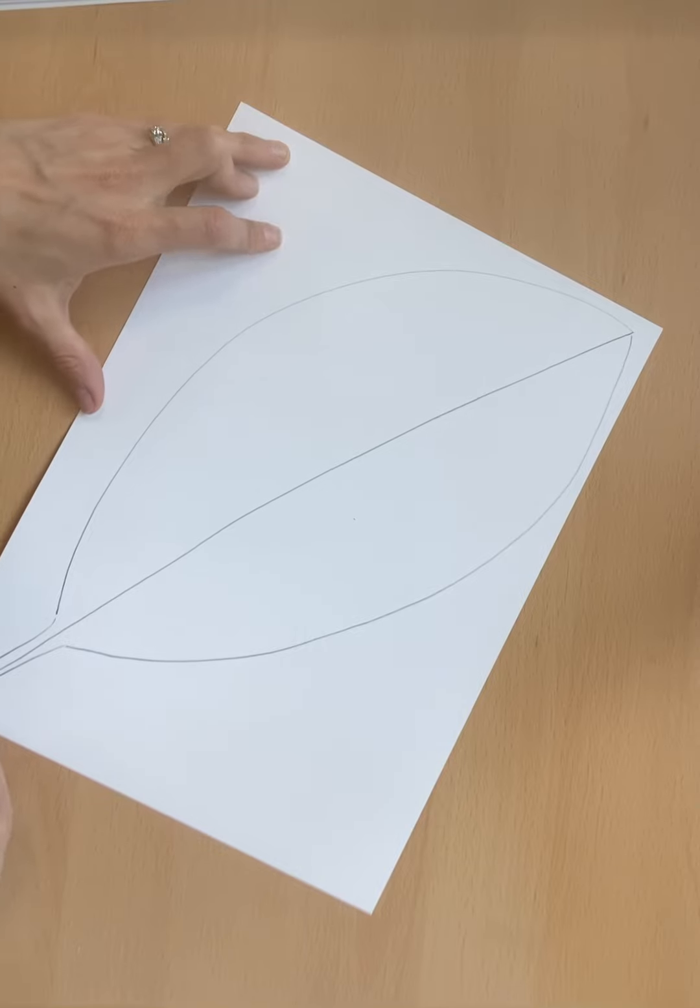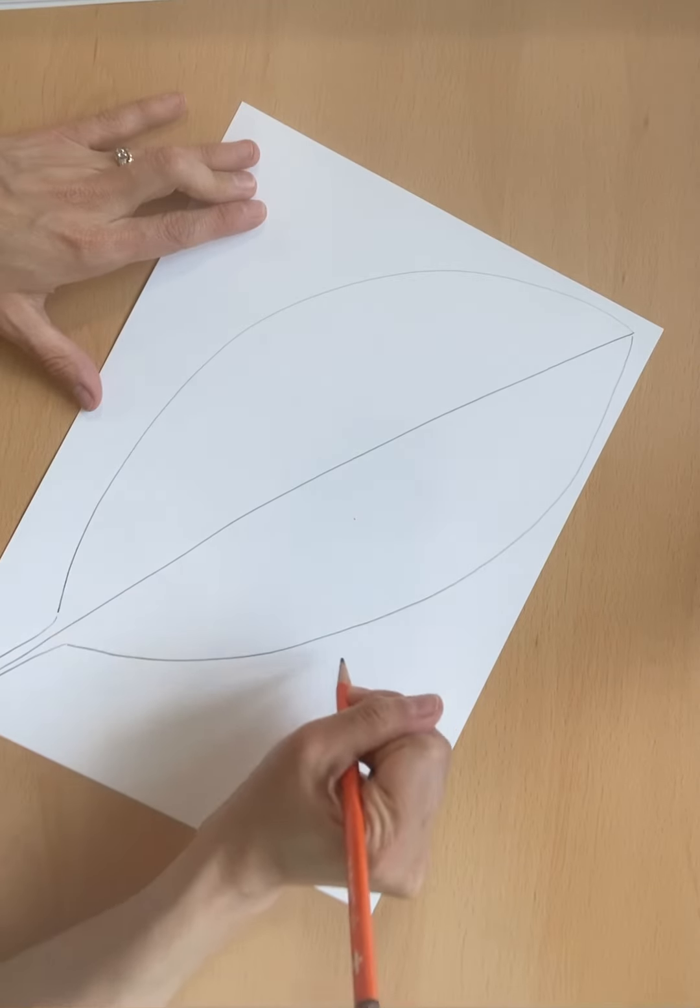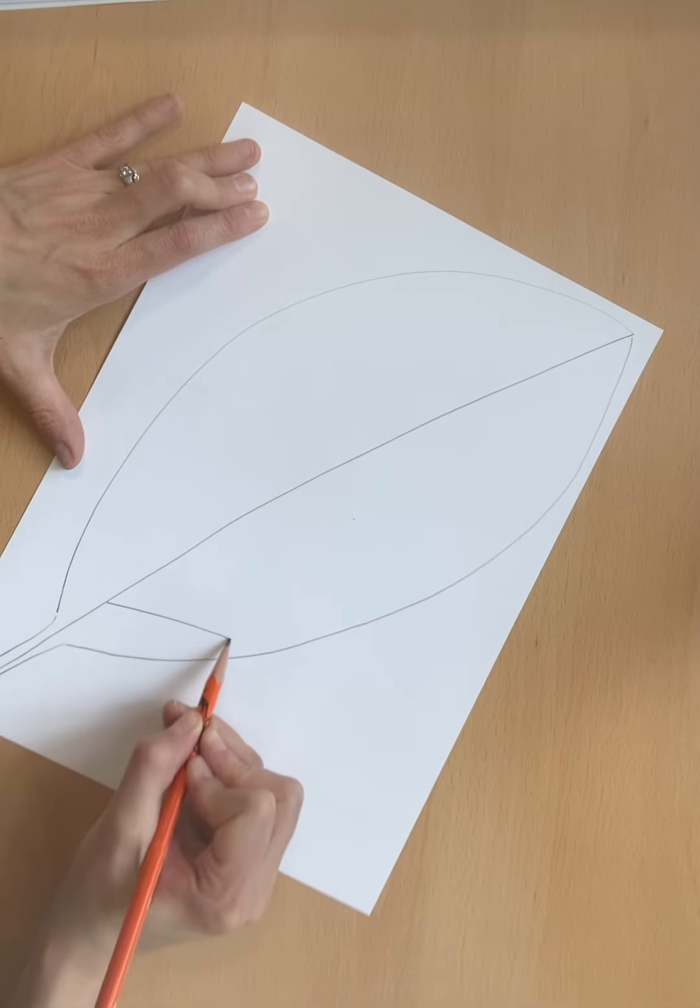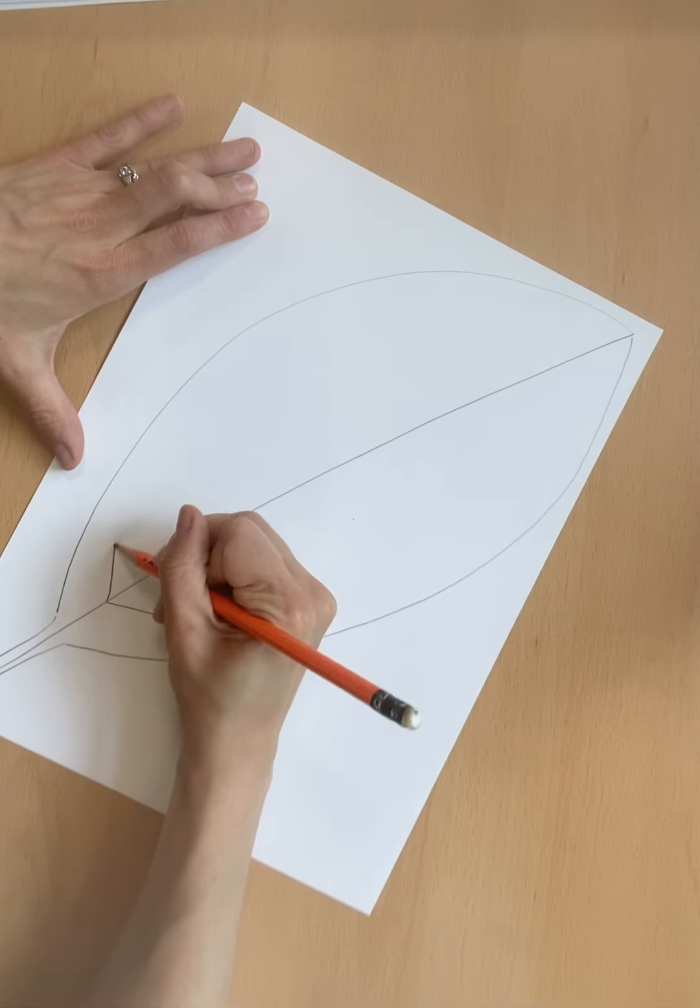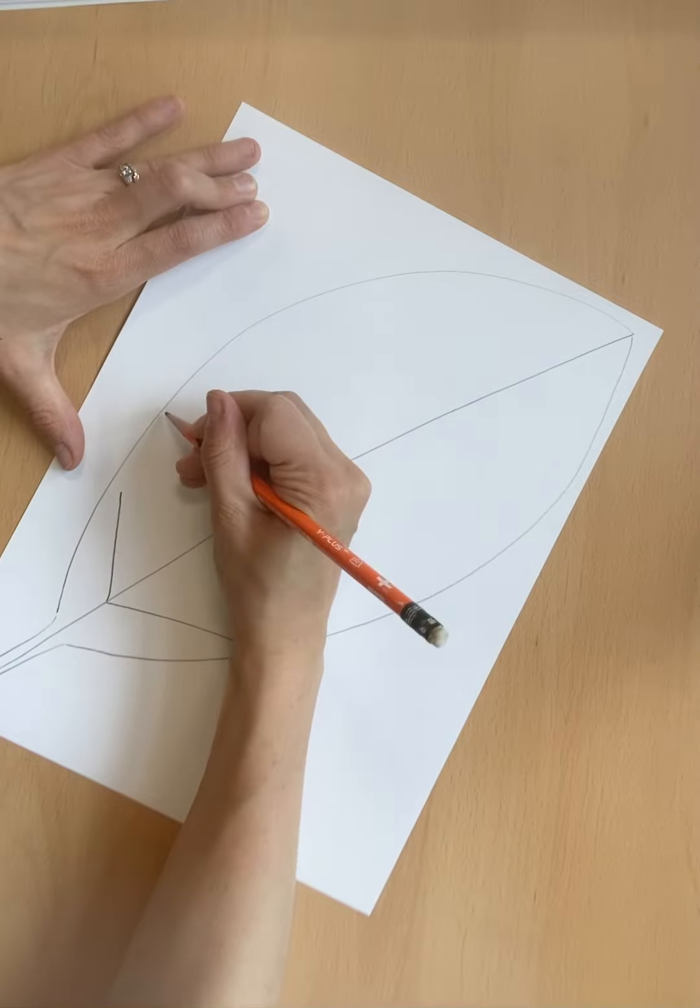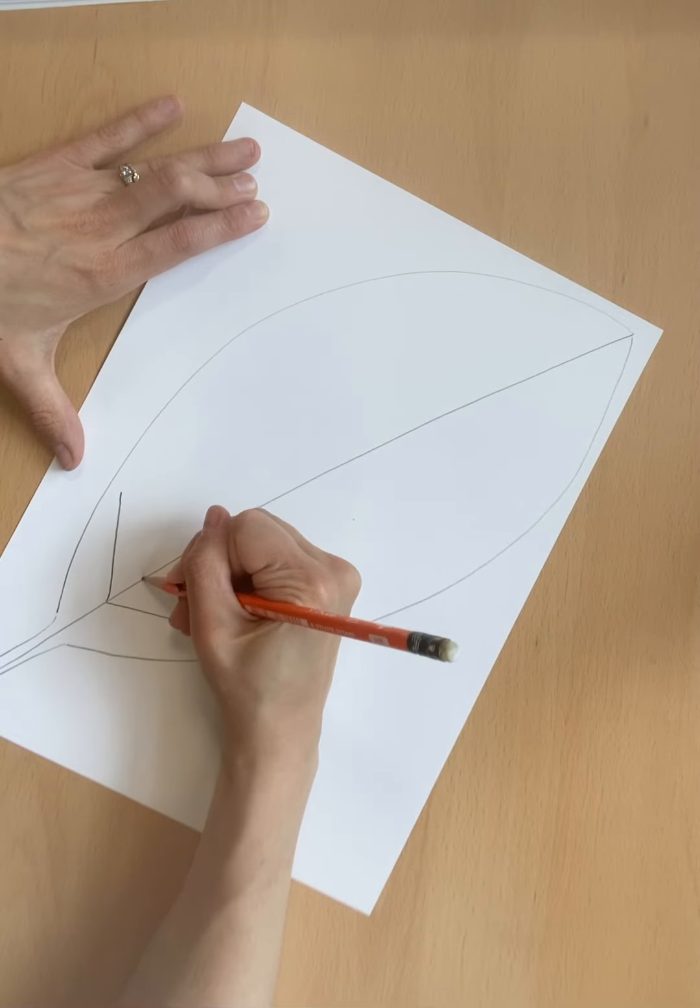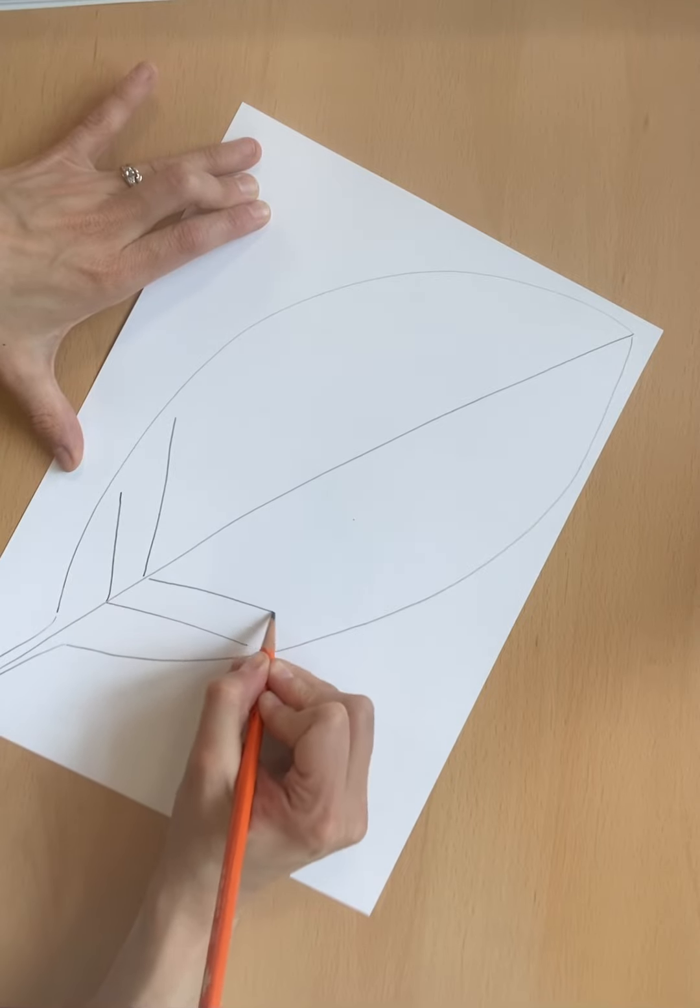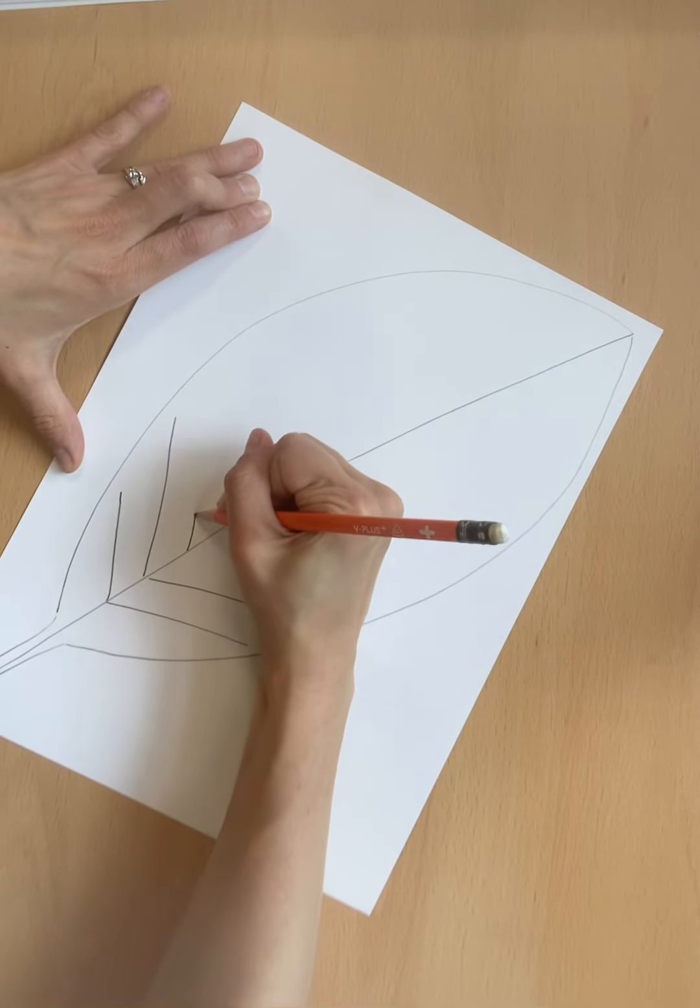And now we're just going to draw some lines that go out. I can draw lines like this, and you can connect it. It doesn't matter. It's just going to go out.